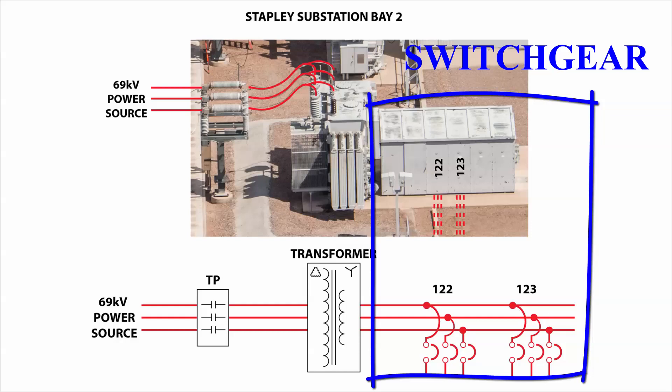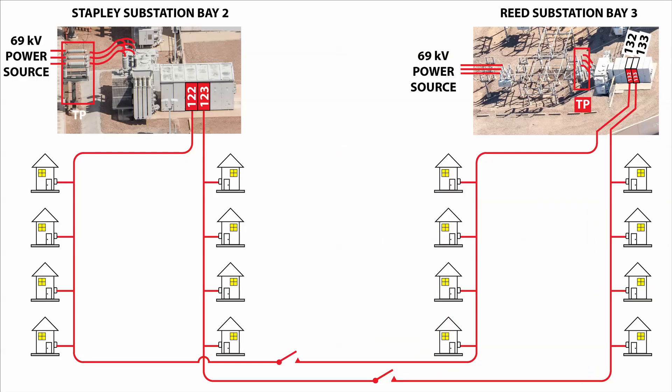Some of the three-phase 12 kV power coming out of the substation is connected to industrial and commercial customers. For residential customers, the three-phase 12 kV circuit is split up into three separate conductors. The individual conductors are energized at 7.2 kV to ground and branch out through neighborhoods. Small transformers near homes which convert the 7.2 kV to 120 volts are not shown here to simplify the drawing.